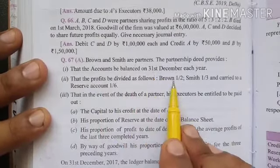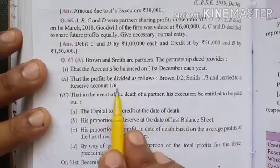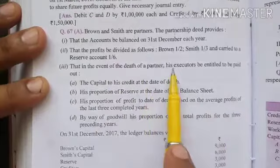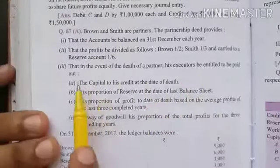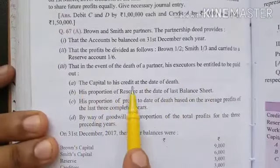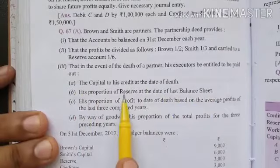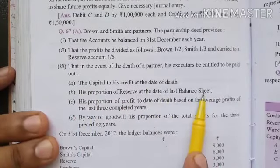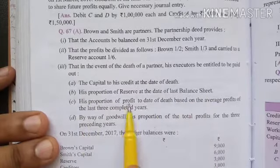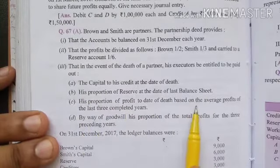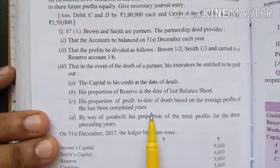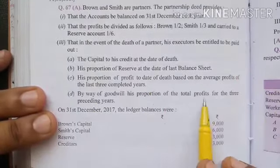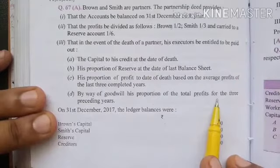The profit is divided as follows: Brown 1/2, Smith 1/3, and Reserve 1/6. In the event of the death of a partner, his executors are entitled to be paid: his capital to his credit at the date of death, his proportion of reserve at the date of the last balance sheet, his proportion of profit to the date of death based on average profit of the last three completed years, and by way of goodwill his proportion of total profit for the three preceding years.